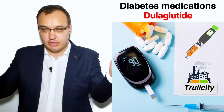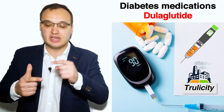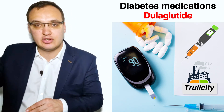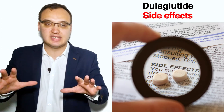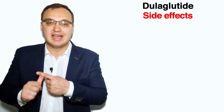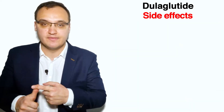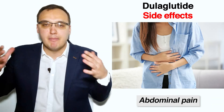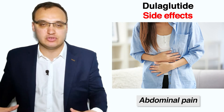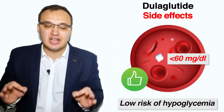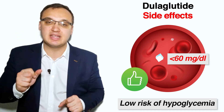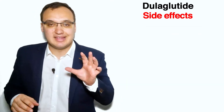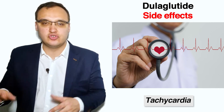Now let's discuss the side effects. Possible side effects include gastrointestinal problems such as nausea, vomiting, constipation, diarrhea, flatulence, and abdominal pain — these are the most common side effects. Generally, GLP-1 agonists do not cause hypoglycemia, but it can sometimes happen when used together with insulin and sulfonylurea at the same time. Tachycardia, or fast heart rate, can also occur, but that is usually rare.